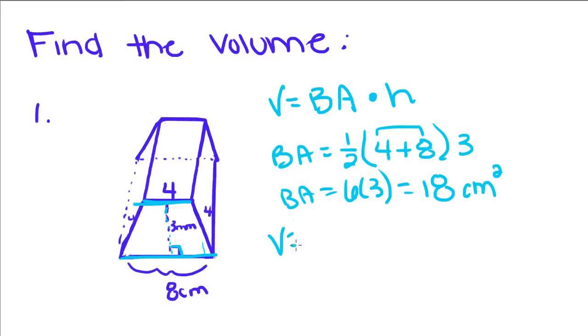So now we're going to take our base area and multiply it by the height of this prism, which is three. So our volume is fifty-four centimeters cubed.